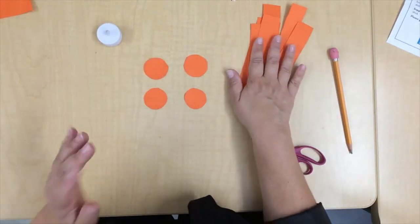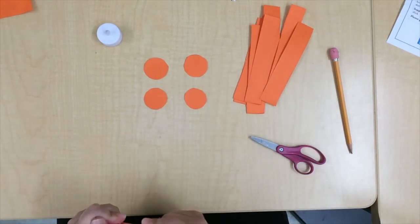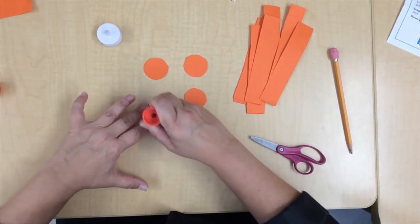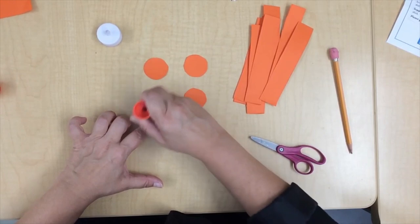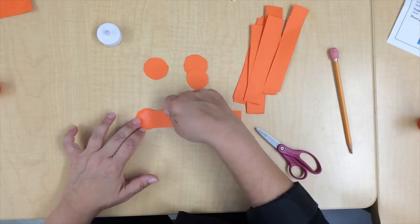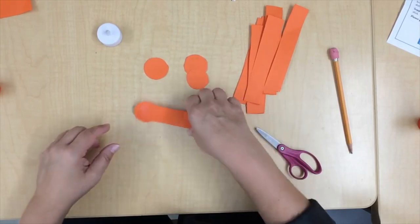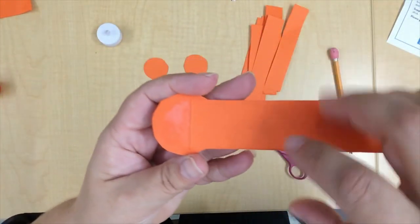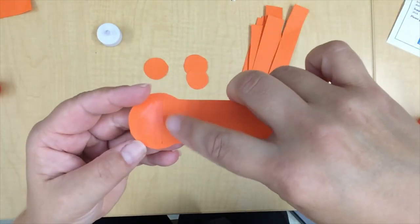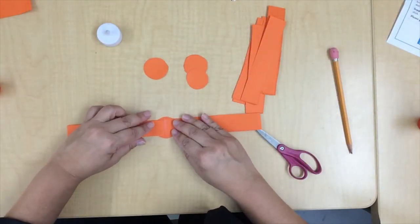All right, so now we have four circles and eight strips. What we're going to do is take one of the circles and start to assemble our pumpkin. Put some glue on one of the circles and put a strip of paper across. You're going to want to put it not all the way on the paper, just about on the right edge of the paper. Take one more strip and put it on the other side.